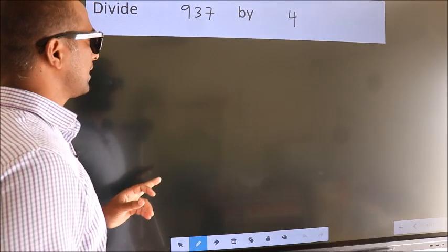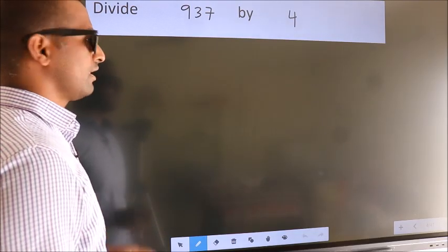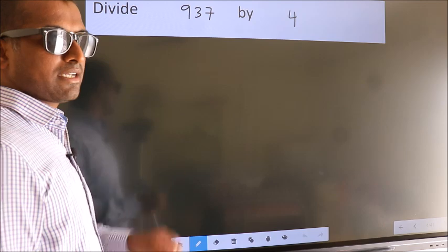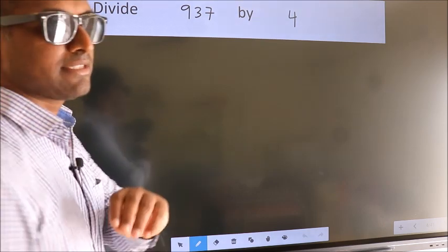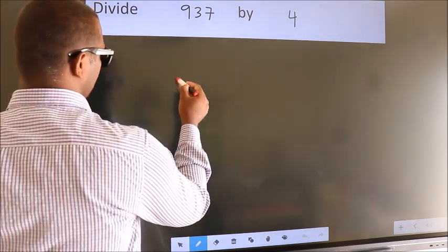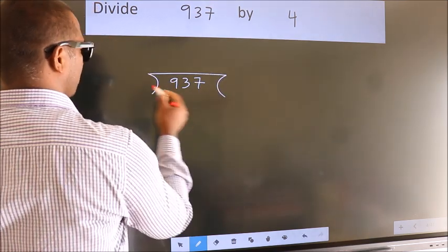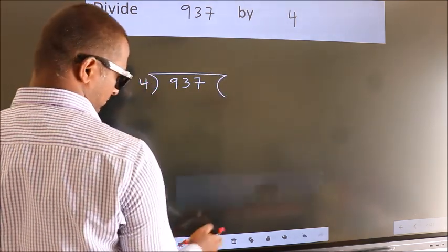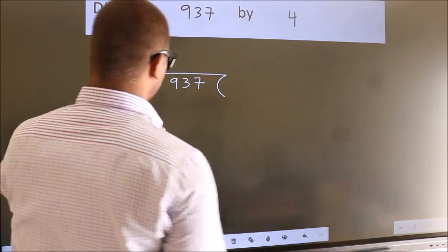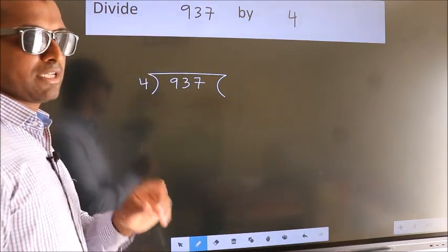Divide 937 by 4. To do this division, we should frame it in this way. 937 here, 4 here. This is your step 1.